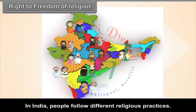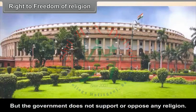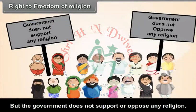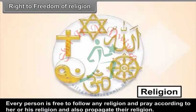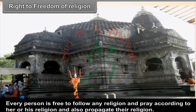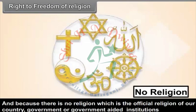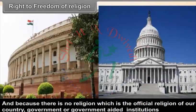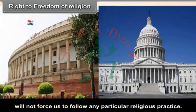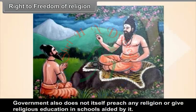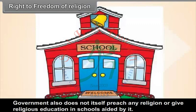In India, people follow different religious practices, but the government does not support or oppose any religion. Every person is free to follow any religion and pray according to their religion and also propagate their religion. The government will not differentiate between persons of different religions. And because there is no official religion of the country, government or government-aided institutions will not force us to follow any particular religious practice or give religious education in schools.